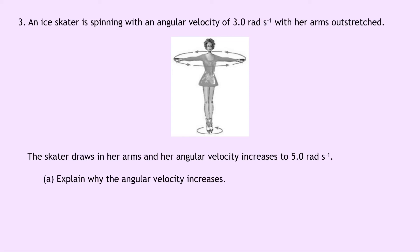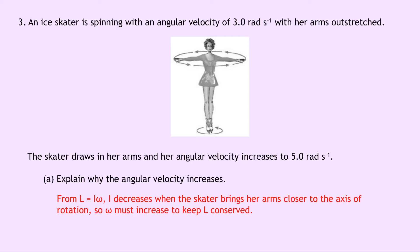Question 3: an ice skater is spinning with an angular velocity of 3.0 radians per second with her arms outstretched. She draws in her arms and her angular velocity increases to 5.0 radians per second. Part A asks to explain why the angular velocity increases. From L equals I omega, the moment of inertia I decreases when the skater brings her arms closer to the axis of rotation, because more mass is now closer to her body so R decreases, and therefore I decreases. If I decreases, then omega must increase to keep the total angular momentum conserved.